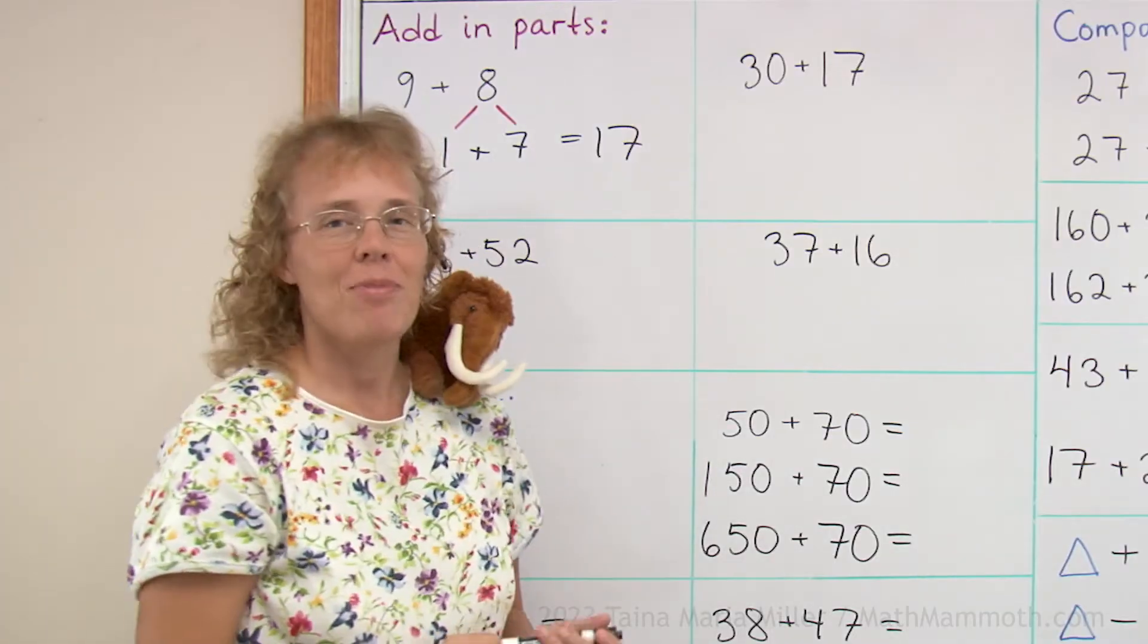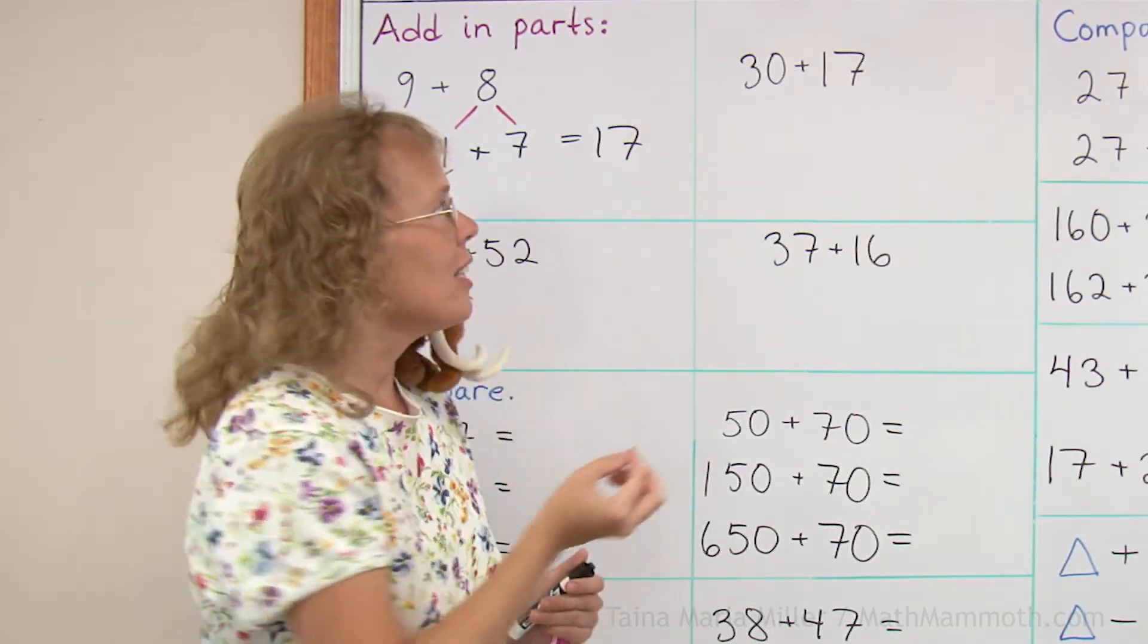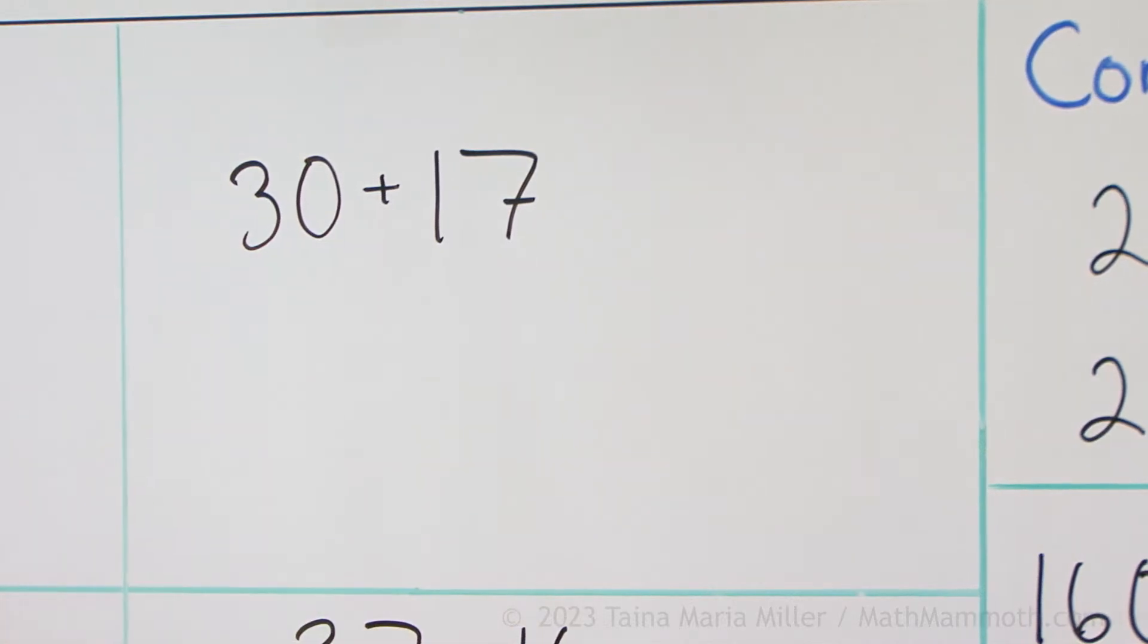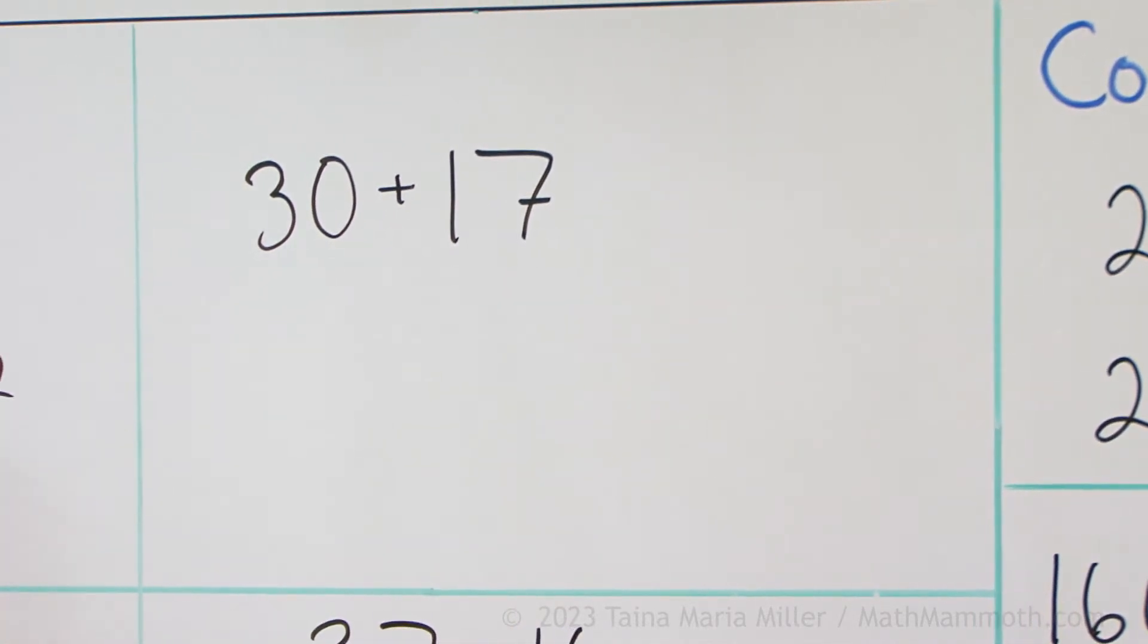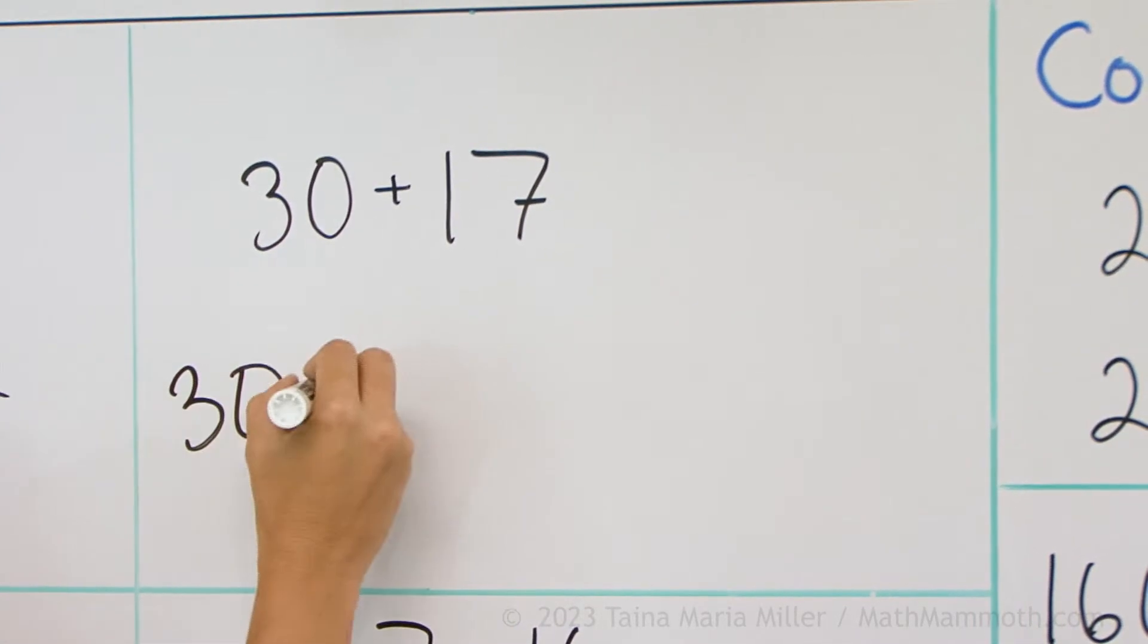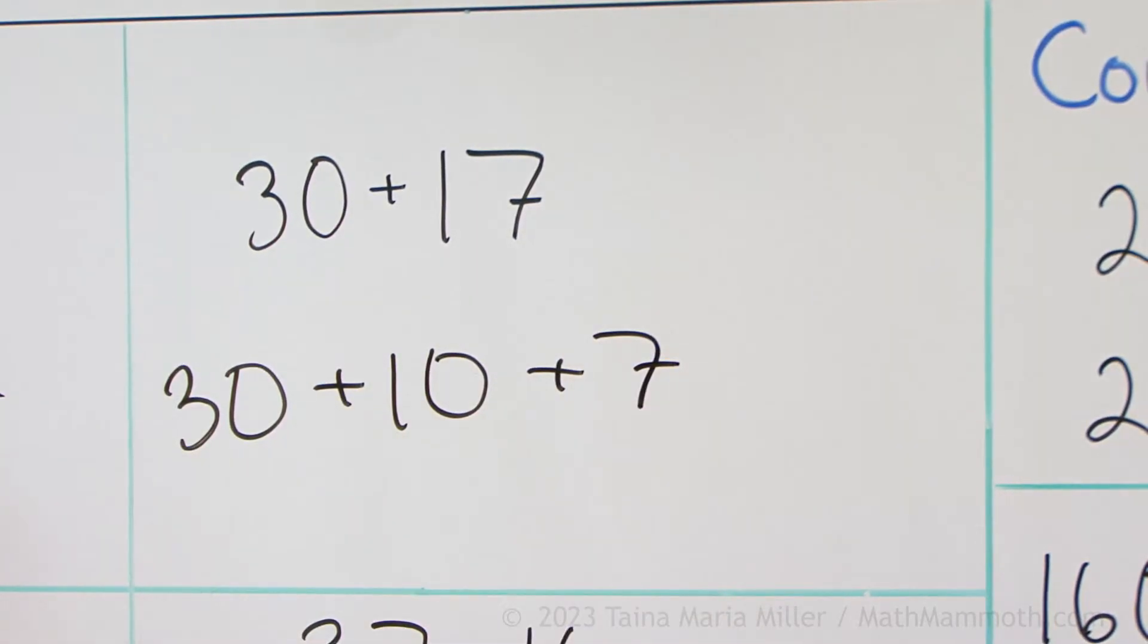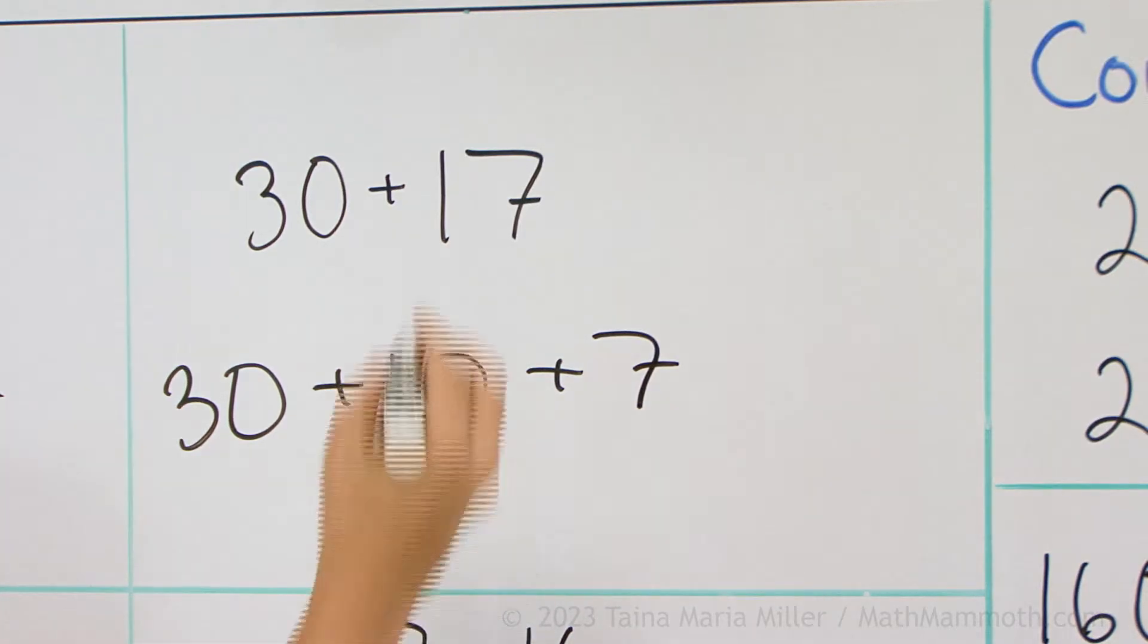30 plus 17. If we add in parts, then I will take this number 17 and think of it as 10 and 7. So I will add 30 and 10 first and lastly the 7. So this makes 40 and then the 7, so 47.